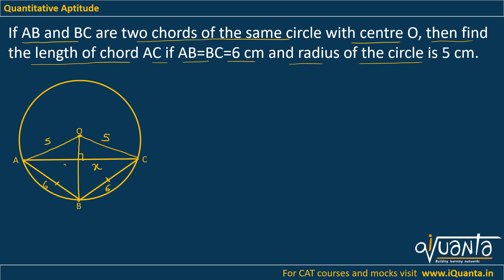We need to find out the length of AC. So let this be X, this will be Y. X, X because when we drop a perpendicular from the center on a chord it is bisected.